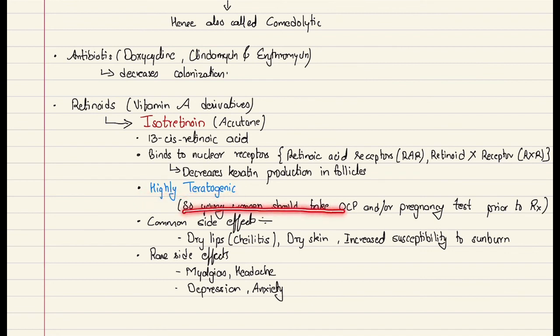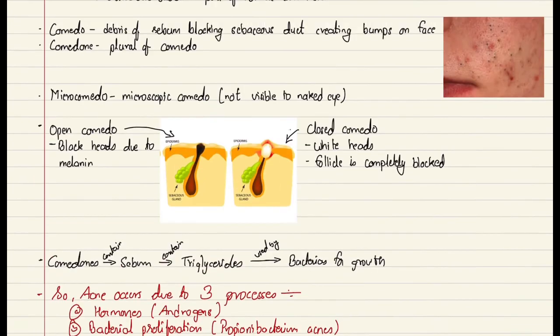A young woman should take oral contraceptive pills and do pregnancy tests prior to treatment. If you are already pregnant, you should avoid taking isotretinoin because it's highly teratogenic. Some other common side effects include dry lips or cheilitis, dry skin, and increased susceptibility to sunburn. Some rare side effects are myalgias, headache, depression, and anxiety. This much for acne. Thank you.